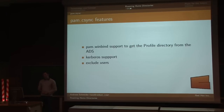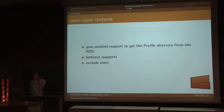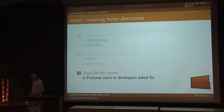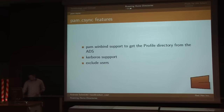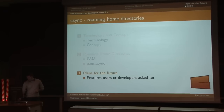PAM CSync has some features — it works really well with PAM WinBind. If you use PAM WinBind, it has a special mode where it gets information from the Active Directory server. It has Kerberos support, so if you use the SMB plug-in, it will use Kerberos for credentials. It can exclude users that you don't want synchronized. There are also features to change server locations with a list, and the source code is available at the same place as Csync.